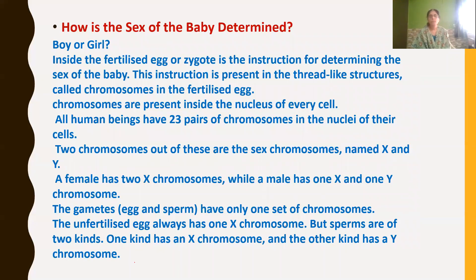Now let us study how the sex of the baby is determined — whether the baby will be a boy or a girl. Inside the fertilized egg, fertilization is the fusion of male and female gametes. The male gamete is sperm and the female gamete is ova. Fertilization results in the formation of a zygote, which determines the sex of the baby. This instruction is present in the form of thread-like structures called chromosomes in the fertilized egg.